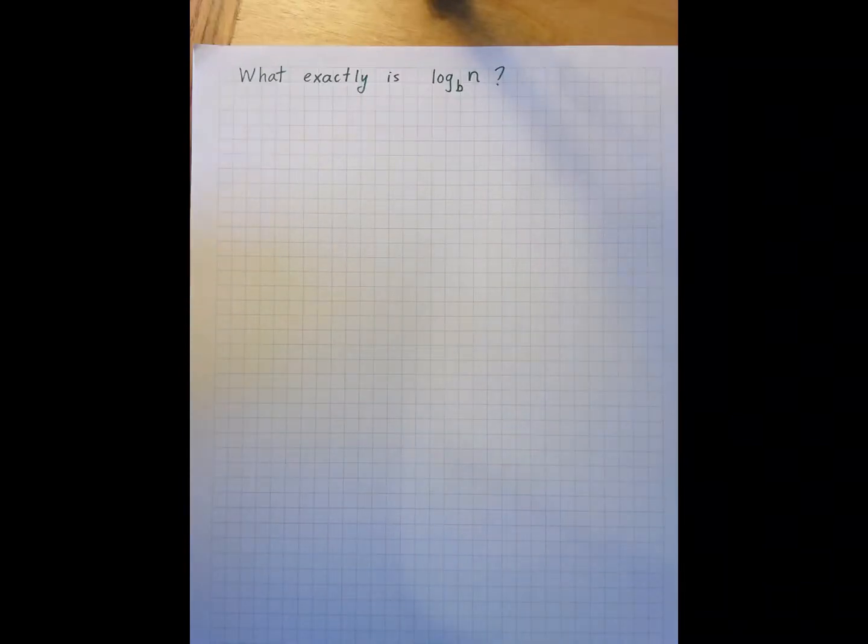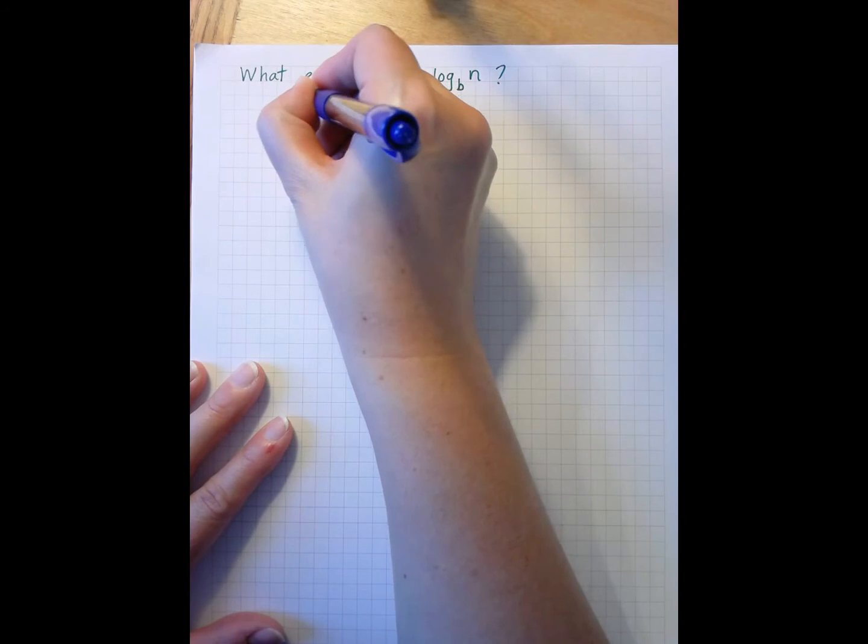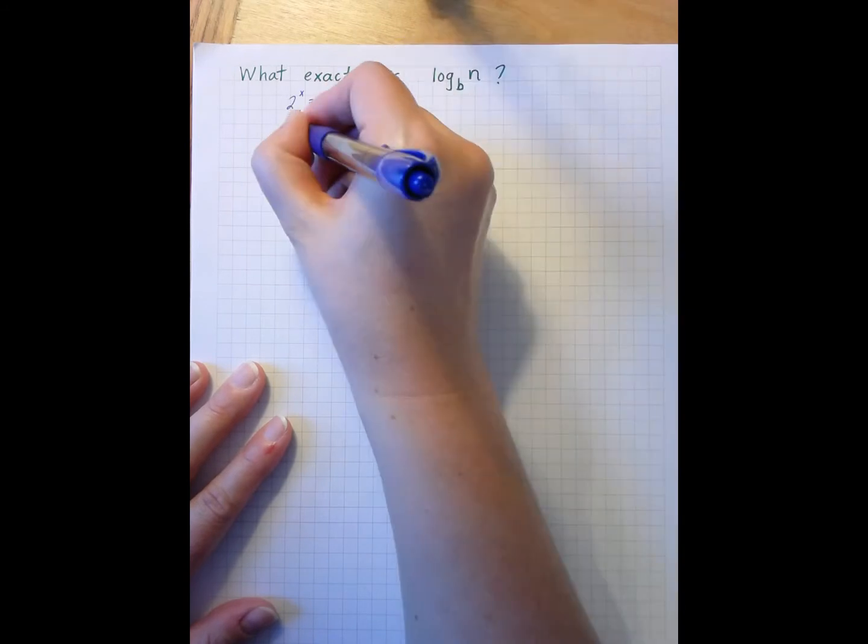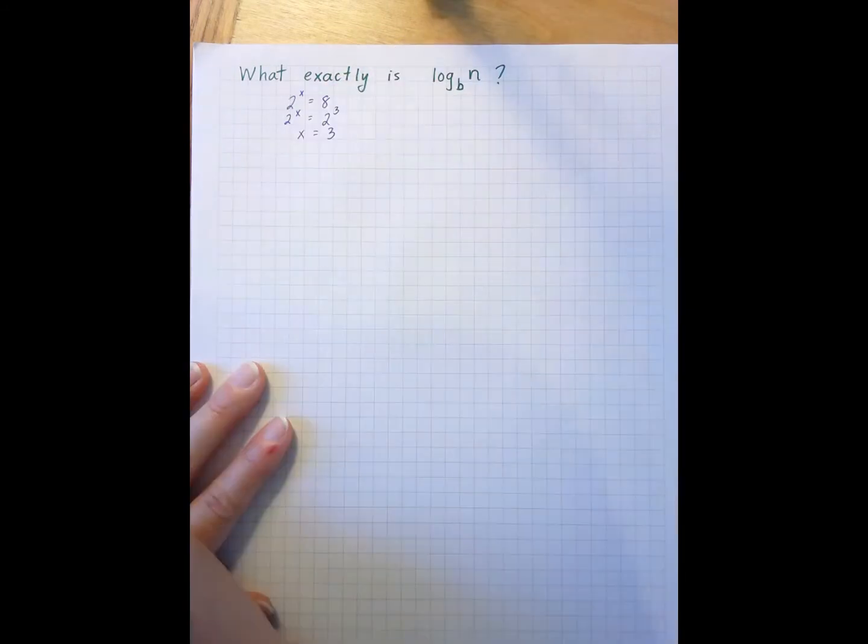In Module 1, we started to talk about logarithms and the way they work and why we use them. In particular, the notes for Module 1, Introducing Logarithms, talked about how I can find the answer to something like 2 to the x equals 8. I can rewrite 8 as 2 to the third, which means x equals 3.